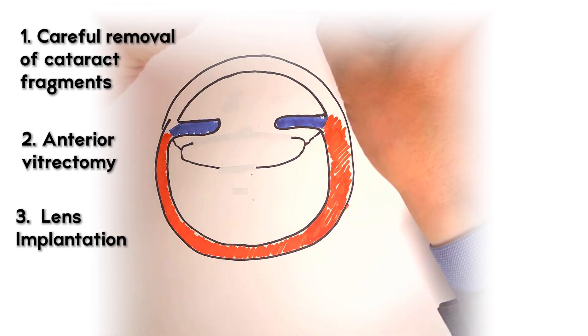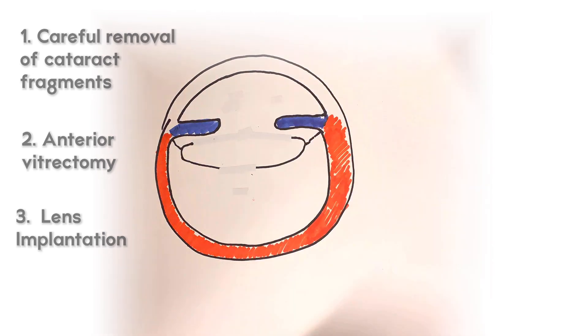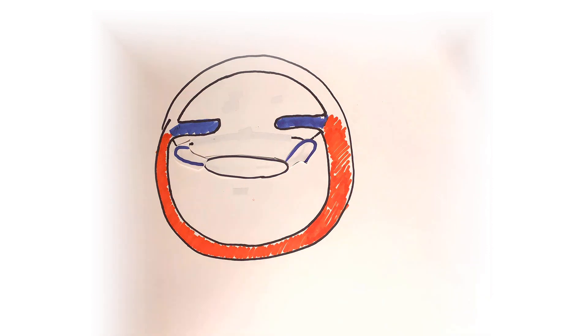My own preferred method for posterior lens implantation is using the Yamane technique with intrascleral haptic fixation. The Yamane technique secures the haptic arms of the lens implant to the inside of the sclera of the eye without sutures. I'll have another video on this later.